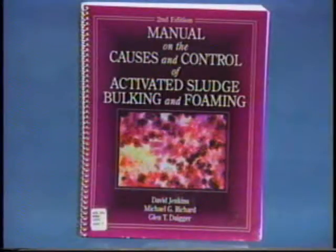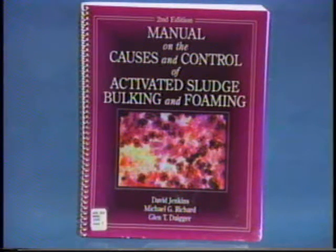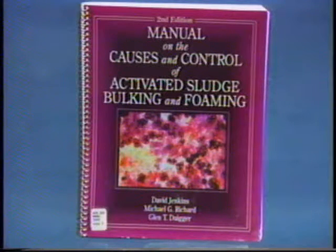Identification of filaments that grow in activated sludge is a valuable technique to troubleshoot and correct bulking and foaming problems. This identification is based on their Gram and Neisser staining reactions. With some experience, one can become quite good at filament identification — a valuable tool for operating any activated sludge system. For more information on filament identification, consult: Manual on the Causes and Control of Activated Sludge Bulking and Foaming, Second Edition, by David Jenkins, Michael Richard, and Glenn Dagger. Lewis Publishers, Boca Raton, Florida, 1993.